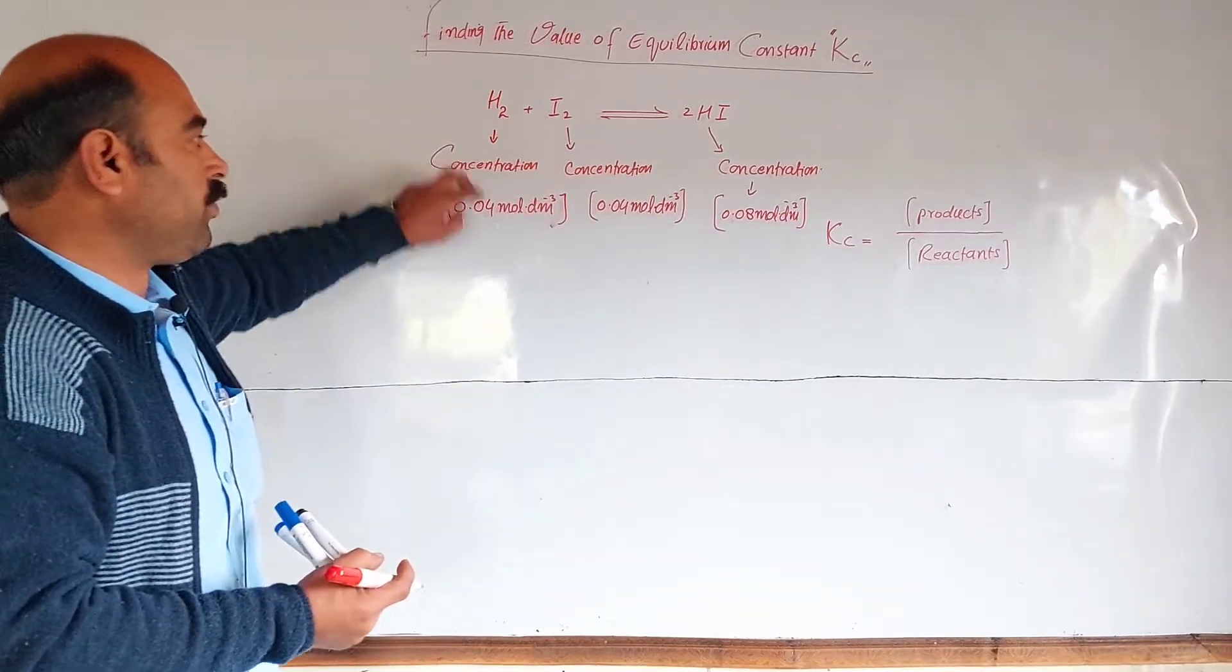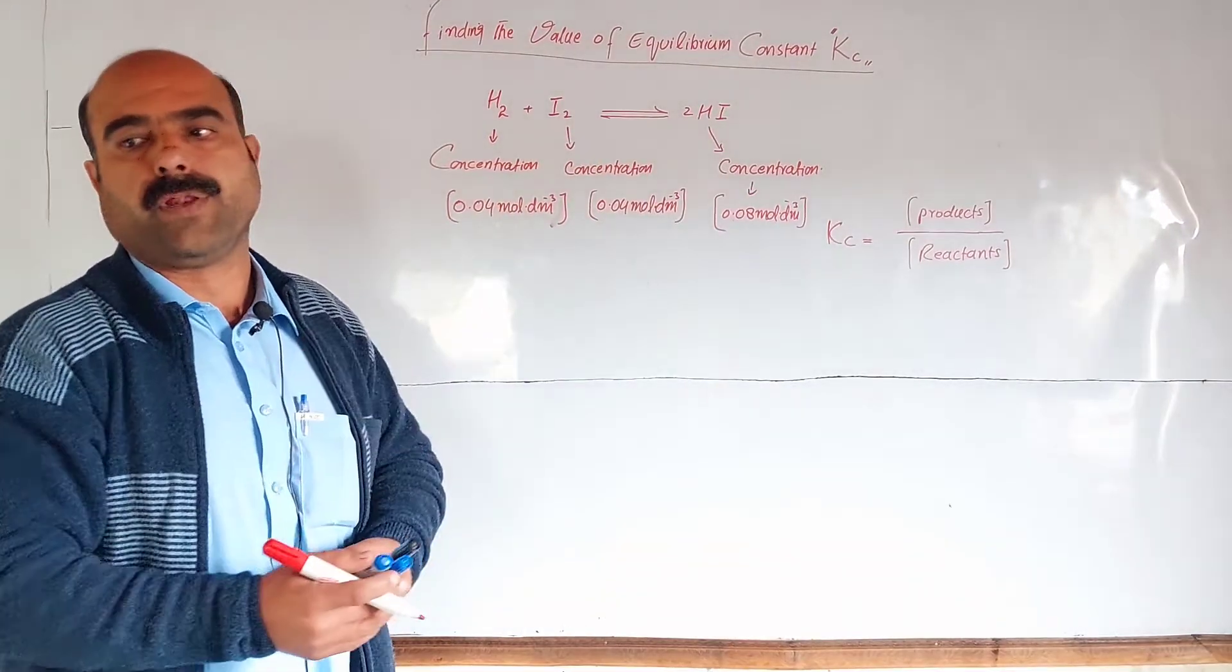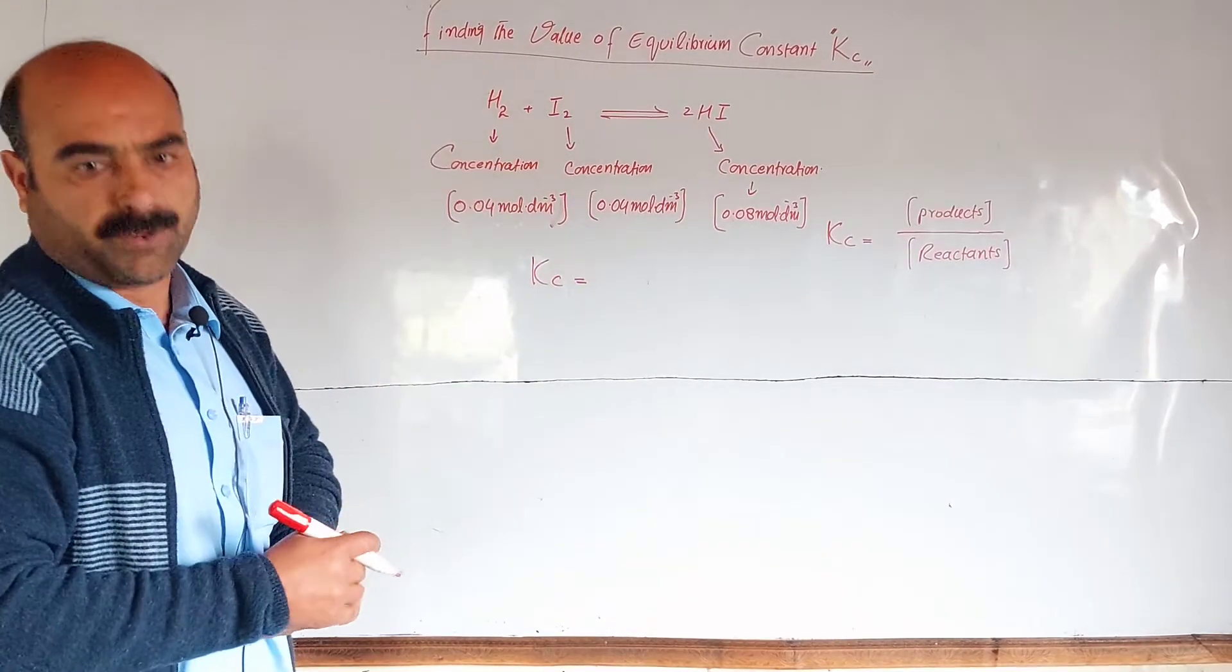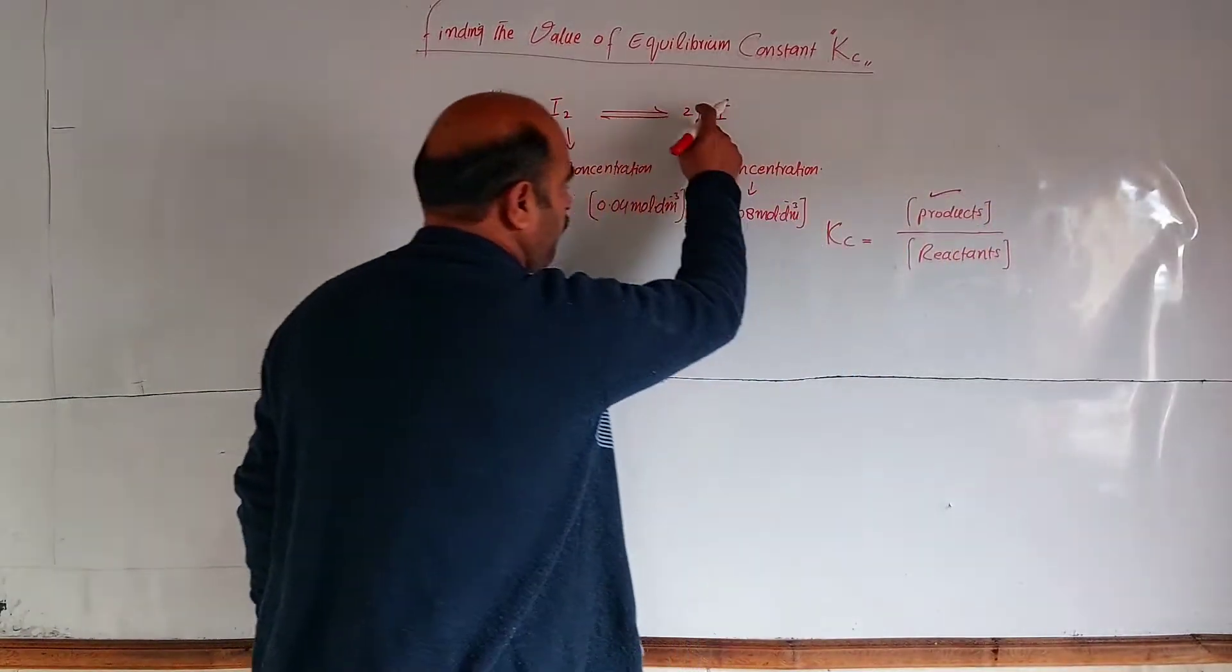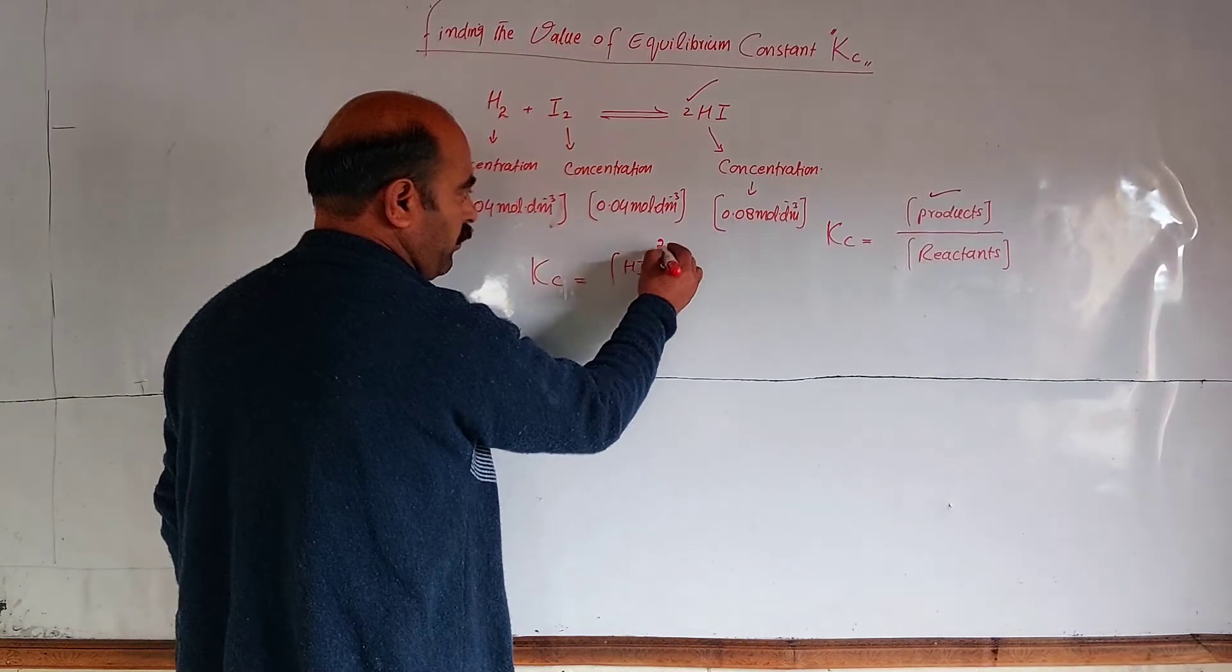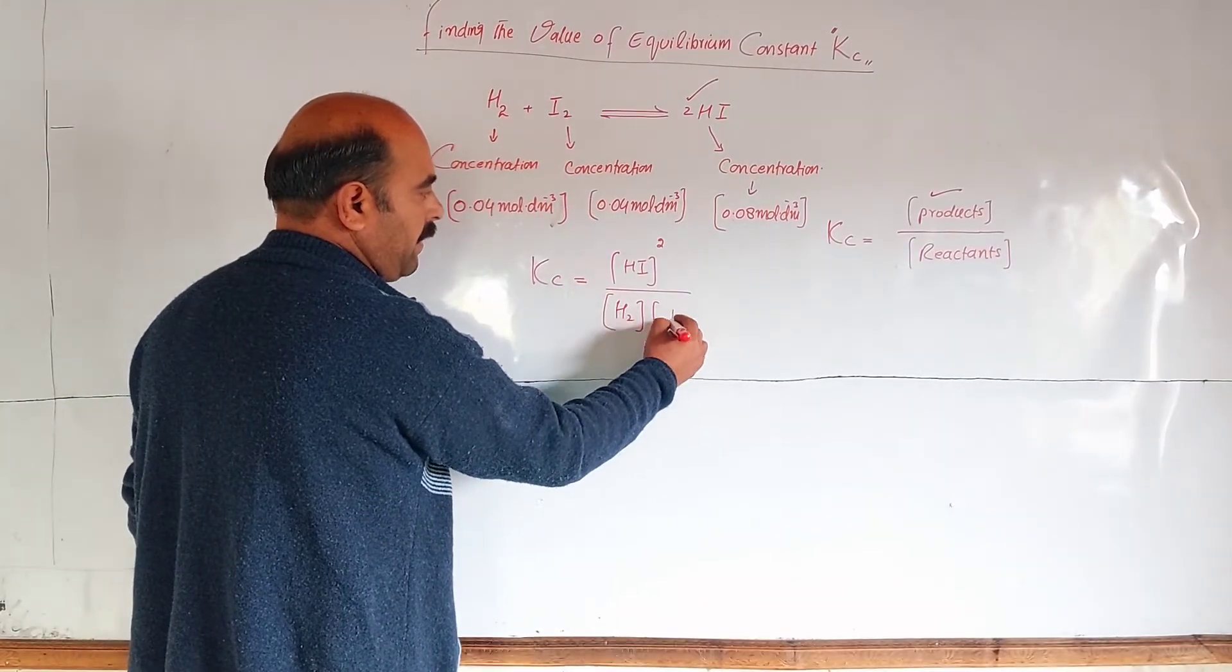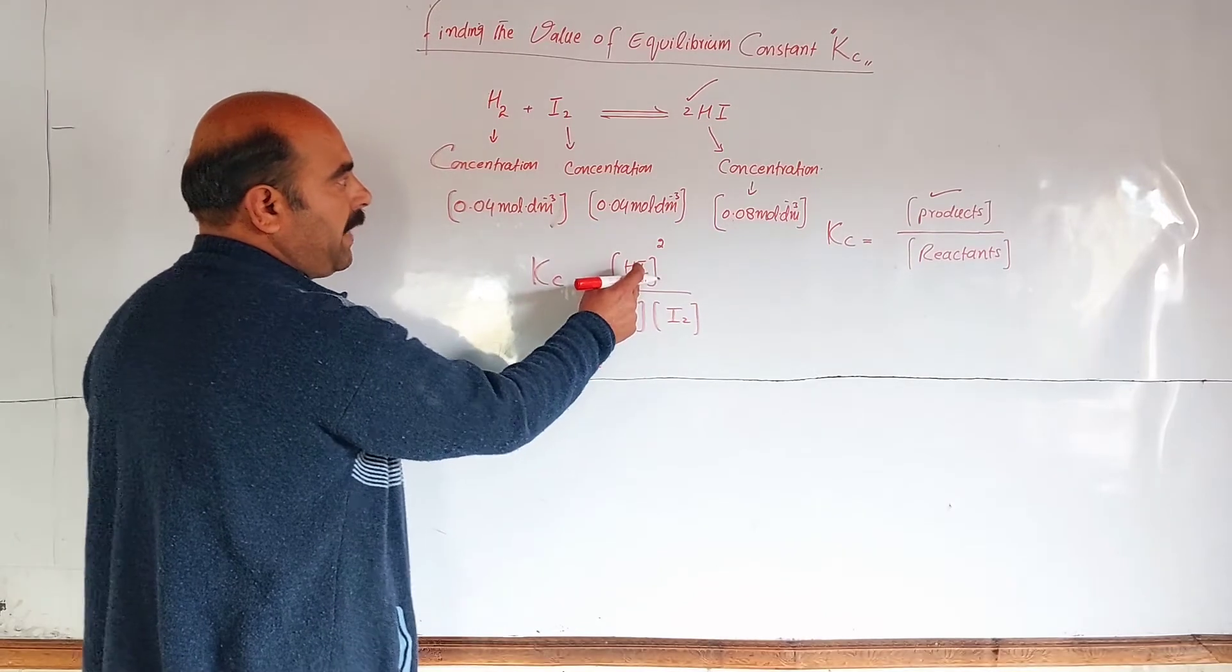We find out the value of Kc. For this reversible equation, Kc equals concentration of products, concentration of hydrogen iodide to the power 2, divided by concentration of reactants: hydrogen concentration multiplied by iodine concentration. Kc equals concentration of hydrogen iodide in equilibrium state.